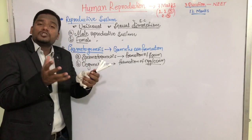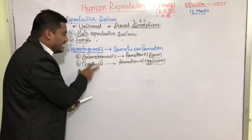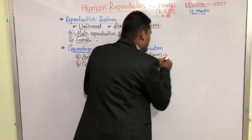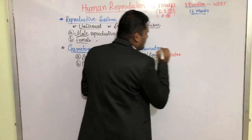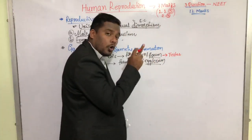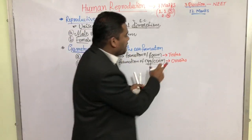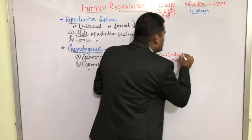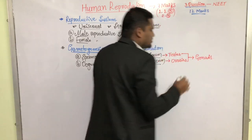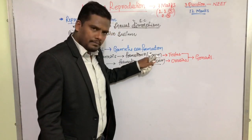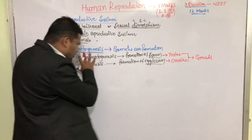Spermatogenesis means the process of formation of sperm — sperm is the male gamete. Oogenesis means the formation of egg or ovum — the female gamete. We will study the detailed processes of both in this chapter. Sperms are produced inside the testis, whereas the egg or ovum is produced inside the ovaries. The testis and ovaries are located in the male and female body respectively, and they are simply called gonads.